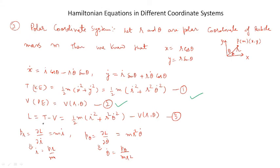Let potential energy be V(r, theta). The Lagrangian is L equal to (1/2)m(r_dot² + r² theta_dot²) minus V(r, theta), which is equation number 3. Now for the generalized momenta: pr equal to del L over del r_dot equal to mr_dot, so r_dot equal to pr/m. And p_theta equal to del L over del theta_dot equal to mr² theta_dot, so theta_dot equal to p_theta over (mr²).